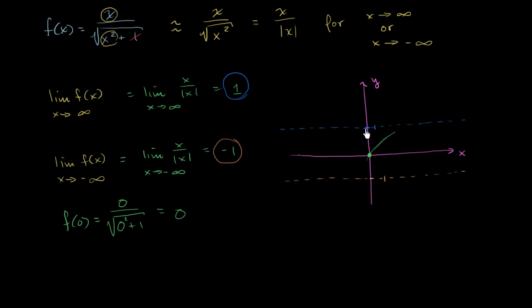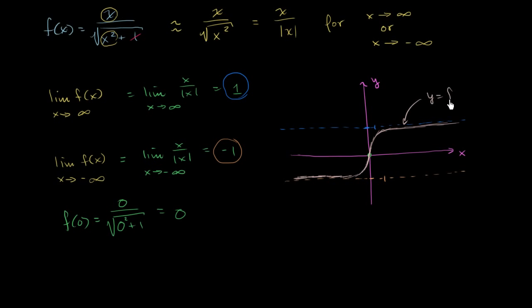We have this point at the origin, and we know that as x approaches infinity we're approaching the upper horizontal asymptote, and as x approaches negative infinity we're approaching the lower asymptote — so the graph might look something like this. We get closer and closer to y equals 1 as x gets larger, and closer and closer to y equals negative 1 as x approaches negative infinity. That right there is y equals f of x, and you can verify this with a graphing calculator.